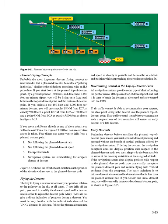Descent flying concepts: probably the most important descent flying concept to understand is that a planned descent is basically a pathway in the sky, similar to the glide slope associated with an ILS procedure. If you start down at the planned top-of-descent point, fly a ground speed of 180 knots, and descend at 1,000 feet per minute (FPM), you will be flying on a fixed path between the top-of-descent point and the bottom-of-descent point. If you maintain the 180-knot and 1,000 FPM descent, you will cross 18 nautical miles from ESA at exactly 9,000 feet, 12 nautical miles from ESA at 7,000 feet, and 6 nautical miles from ESA at exactly 5,000 feet. If you are at a different altitude at any of these points, you will not cross ESA at the required 3,000 feet unless corrective action is taken.